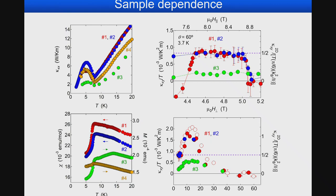We have now measured four crystals. Samples 1 and 2, which show very large κ_xx, exhibit the plateau. We also measured a lower-quality crystal (Sample 3) showing a large anomaly at 14 Kelvin due to stacking faults. In that crystal, we never observe the quantized thermal Hall conductance — only some kind of plateau-like behavior.